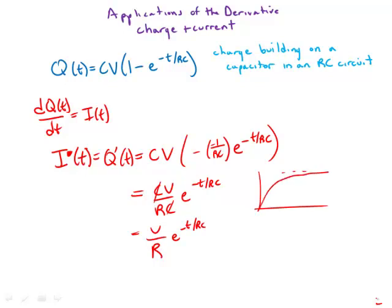And so as the charge builds up and approaches an asymptotic limit, what's happening to the current? It starts at an initial value V/R, which is actually determined by Ohm's law. And then it drops from that initial value and asymptotically approaches 0. And so this is an example of the derivative in an electric circuit.